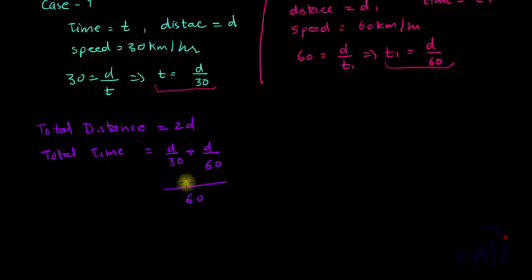60 divided by 30 is 2. 2 multiplied by D is 2D plus 60 divided by 60 is 1. 1 multiplied by D is D. So this is equal to 3D by 60 or you can write it as D by 20. And the total distance over here is 2D.